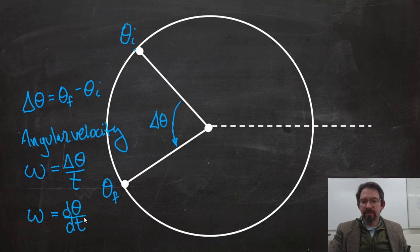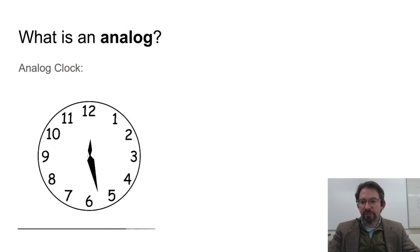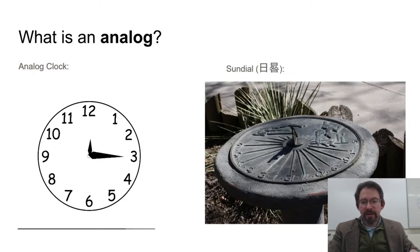So why do we call this an analog? An analog, the first thing that might come to mind is an analog clock, which is a clock that looks like this as opposed to a digital clock. Why is this called an analog clock? Well, an analog is like an analogy. It's a comparison between two things that have parts that relate to each other in the same way. So this clock is an analog of an older technology, the sundial.